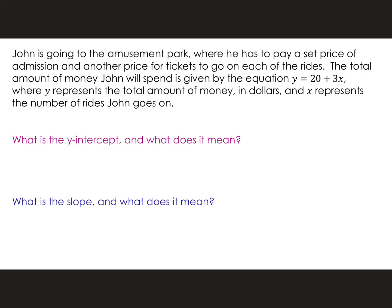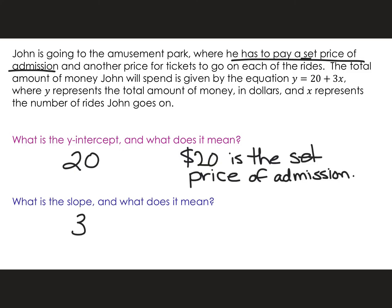John goes on. What's the y-intercept? 20. What's the slope? Three — because three was the number multiplying x, that's my slope. What do you think the y-intercept means? This is where the story starts, this is our initial amount. In this case, he had to pay a set admission price — so that was $20. What about the three? He had to pay another price for the tickets to go on each of the rides. So each ride costs $3.